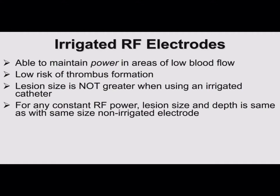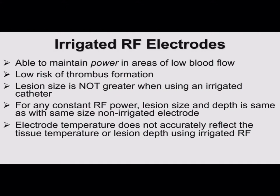Maybe you can stay on longer with irrigation because you're not heating the tip and getting char, but for the same duration and power, you're getting the same lesion size. On the other hand, if you're delivering 10 watts but your temperature is shooting up to 70 degrees with a non-irrigated catheter, that's when switching to irrigated ablation will help — you can cool the tip and deliver more power where you were temperature-limited before. The one thing you lose with irrigated ablation is that temperature from the thermistor is no longer a surrogate of lesion size because you're cooling the tip. Temperature then is just a safety marker — if it's shooting up, something's wrong, like plugged holes or disconnected tubing.